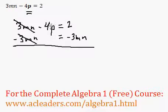So these cancel out. We bring down the negative 4p. And that's going to be 2 minus 3mn.